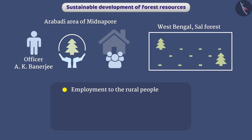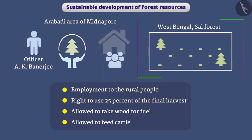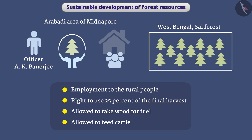The local people were given the right to use 25% of the final harvest and were allowed to take wood for fuel and feed cattle. With the consent and active participation of local people, the Sal forest of Arabari, which was considered useless, became prosperous again. The value of this forest has been estimated at 12.5 crores.